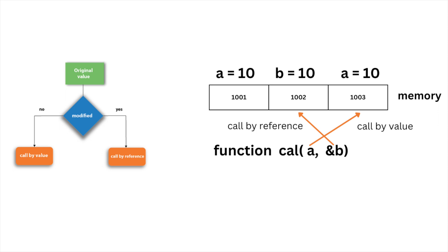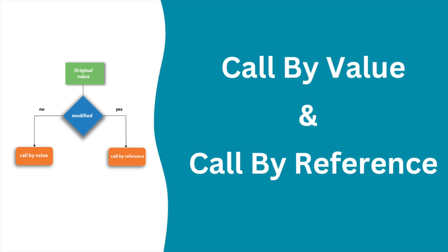To summarize: in call by value, a copy of the variable is sent, memory locations are different, and there is no change in the original value. In call by reference, the variable itself is sent, memory location is the same, and changes inside the function affect the original variable. For call by value you simply pass the variable, but for call by reference you need to pass the address using the ampersand sign. That's all for this video — if you have any doubts, comment below. Thank you for watching, please like, share, and subscribe.